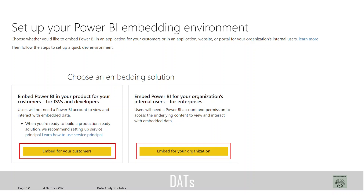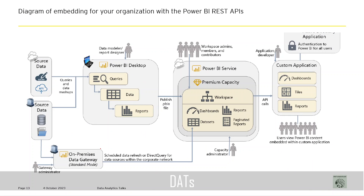We will start by looking at the architecture for embedding Power BI for your organization's internal users. This is the architecture diagram where we embed for our organization using Power BI REST APIs. We will look at each component. There will be data sources from cloud as well as from on-premises, and we use on-premise gateways to connect to on-premise data sources.